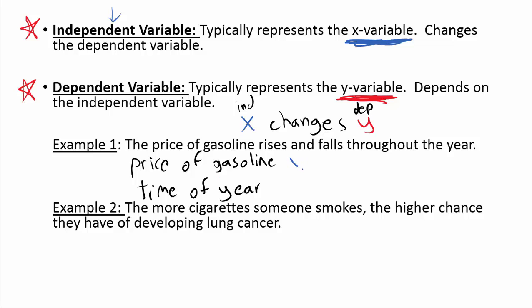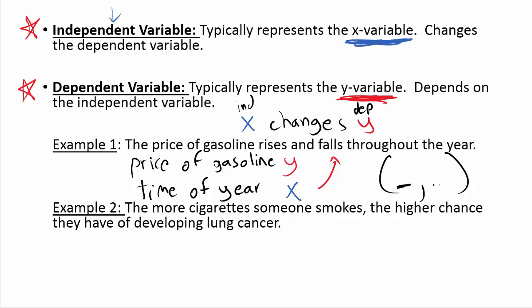Let's read this two different ways using the 'X changes Y' sentence. First, make price of gasoline X and time of year Y: 'The price of gasoline changes the time of year.' That doesn't make much sense. Now flip them: 'The time of year changes the price of gasoline.' That makes a lot more sense. So the X variable is time of year, and Y is the price of gasoline. In an ordered pair, time of year goes in the X spot and price of gasoline in the Y spot.